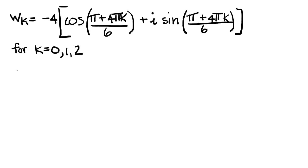The next one is when k is equal to 1. So that's w1, and that's equal to -4 cosine 5π/6 plus i sine 5π/6.